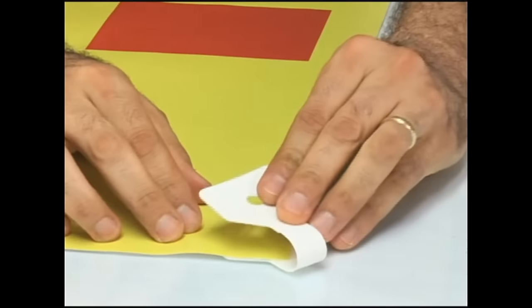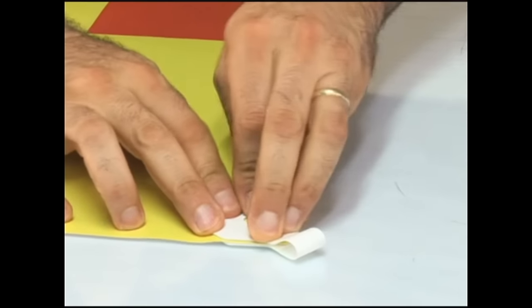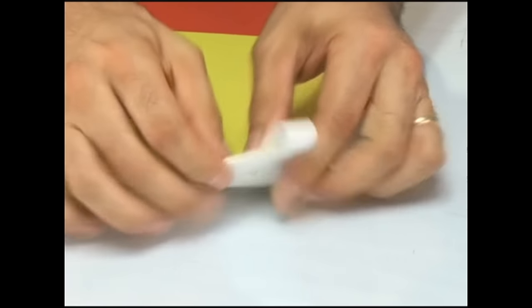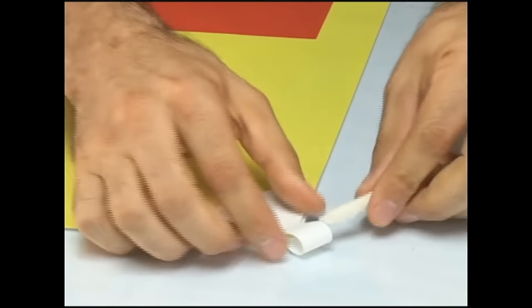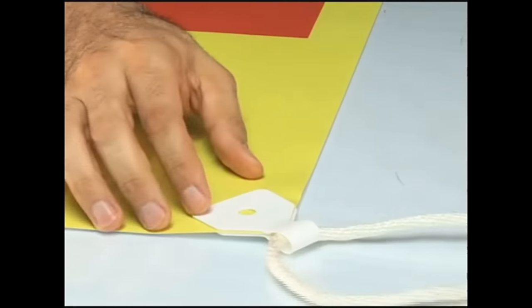Fold the tab over and adhere the other half of the tab to the front of the banner. Repeat at all four corners and you're ready to hang your banner. Simply attach a rope and you're ready to go.